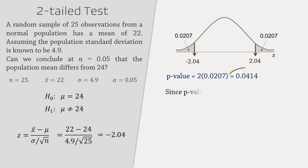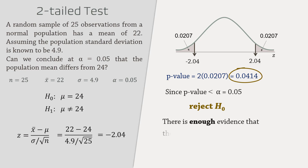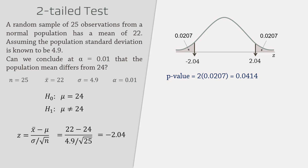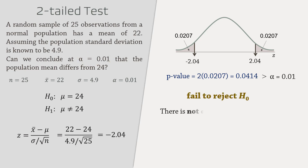Since the p-value is less than alpha, we will reject the null hypothesis and say we have enough evidence to conclude that the population mean differs from 24 at alpha equals 0.05. But if we test this at alpha equals 0.01, the p-value will be greater than alpha, so we will fail to reject the null hypothesis and therefore cannot support the alternative.